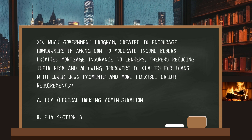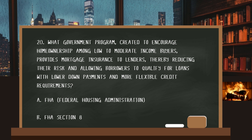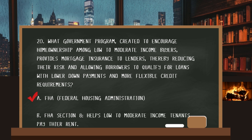Number twenty. What government program — created to encourage home ownership among low to moderate income buyers — provides mortgage insurance to lenders, thereby reducing their risk and allowing borrowers to qualify for loans with lower down payments and more flexible credit requirements? The answer: FHA, the Federal Housing Administration. FHA Section 8 helps low to moderate income tenants pay their rent.